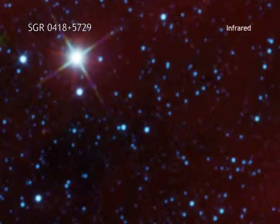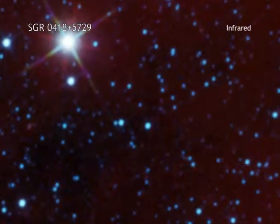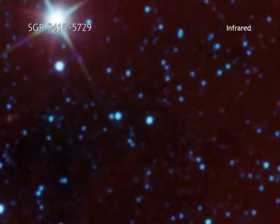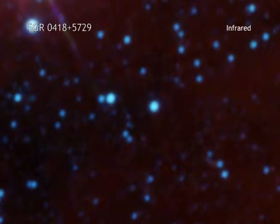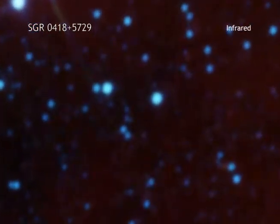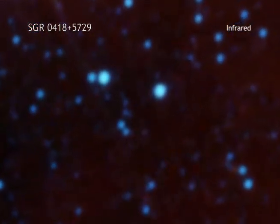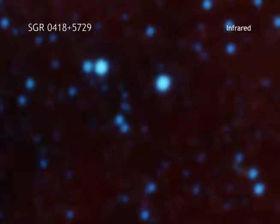A magnetar is a type of neutron star that occasionally generates bursts of x-rays. They usually have a very strong magnetic field on their surface, ten to a thousand times stronger than for an average neutron star.